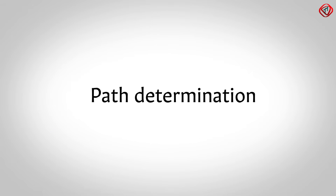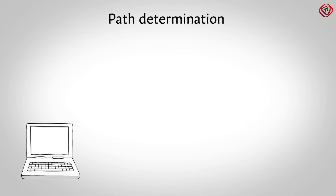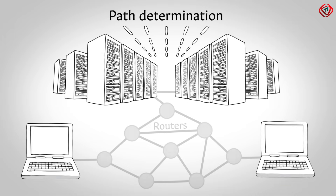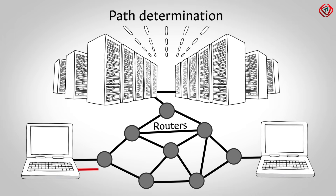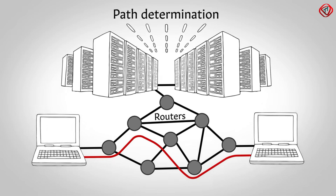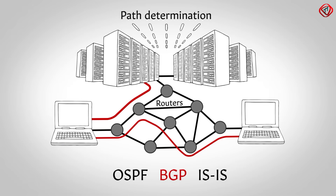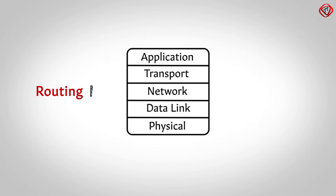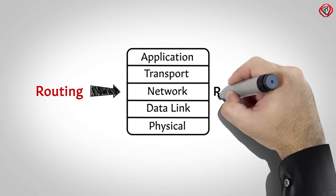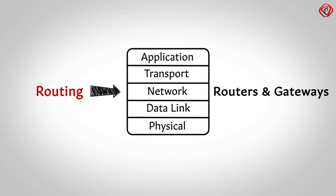Now, path determination. A computer can be connected to an internet server or a computer in several ways. Choosing the best possible path for data delivery from source to destination is called path determination. Layer 3 devices use protocols such as Open Shortest Path First, Border Gateway Protocol, and Intermediate System to Intermediate System to determine the best possible path for data delivery. Because routing takes place at the network layer or layer 3, routers and gateways are sometimes called layer 3 switches.